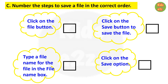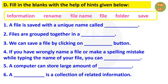Here some steps are given to save a file, but not in the correct order. Kids need to number the steps to save a file. The first step will be: click on the file button. Second step: click on the save option. Third step: type a file name in the file name box. The last step: click on the save button to save the file.